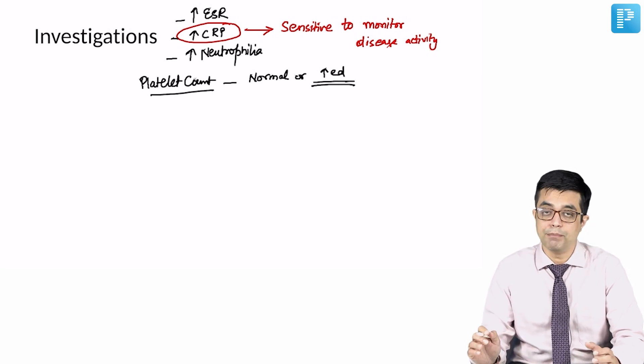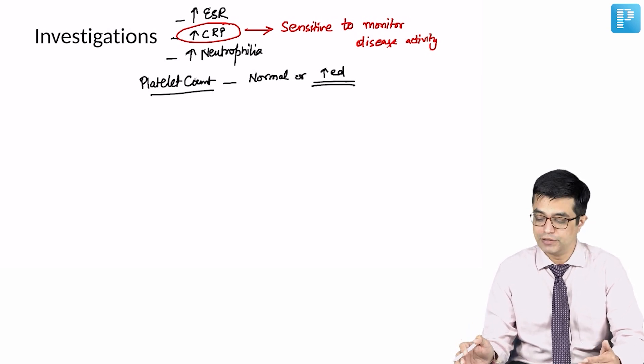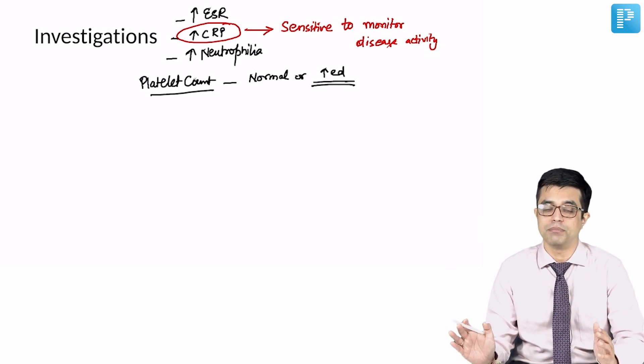Elevation produces massive thrombocytosis with levels reaching as high as 10 lakhs per millimeter cube.